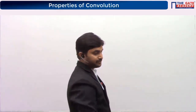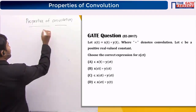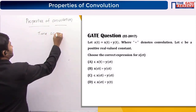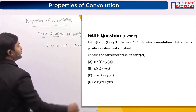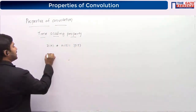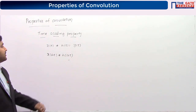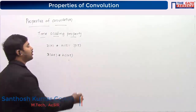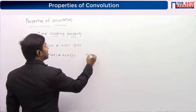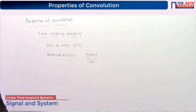Next, please write down the properties of convolution. Time shifting properties are already covered. Let us start with the time scaling property. If x(t) convolved with h(t) is y(t), then x(at) convolved with h(at) gives y(at) divided by the modulus of a. Please let me know what is the correct answer from the given options.